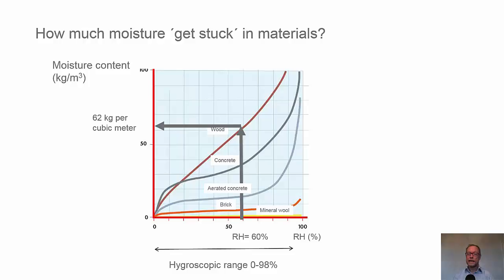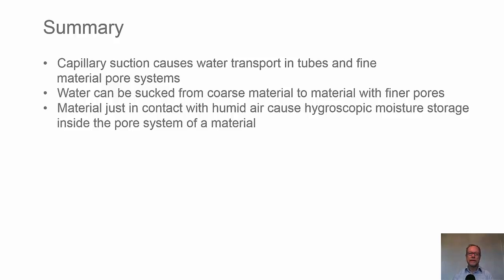We talk about the hygroscopic range — that's between 0 to 98% relative humidity where the material is just surrounded by humid air. If they are in contact with liquid water or condensation inside the material, we can capture even more, and it can fill the pore system and get dramatically more moisture inside the materials. Summary: Capillary suction causes water transport in tubes and fine material pore systems. Water can be sucked from coarse material to materials with finer pores. Material just in contact with humid air causes hygroscopic moisture storage inside the pore system of a material.